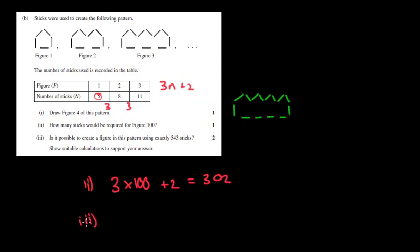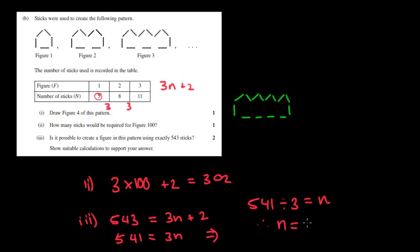Likewise, I can use the same rule for is it possible to create a figure in this pattern using exactly 543 sticks. Except I'm going to go backwards. 543 is equal to 3n plus 2. And then we're going to say 543 minus 2 equals 541. You can actually even put that into equations mode to see what n is going to equal to. I can then say divide by 3, so 541 divided by 3, which equals n. So then if we do that, if it hopefully is an even number, then that's going to be able to work out. So 541 divided by 3, that is not a whole number. Therefore, if n equals, let's say, 180.333, so no, it is not possible because you would have 6 left over, or you need like, etc. That's a tough question because we haven't done that one for some time.